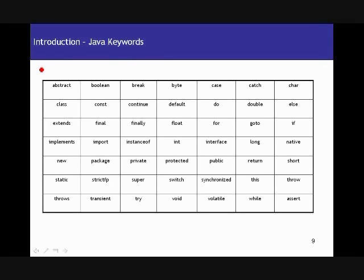The latest version has probably one or two keywords added to this list. A keyword is nothing but a word which has got some kind of special significance to the Java compiler. Whenever the compiler comes across any of these words in the Java program, it knows that it has to deal with it in a special way. It's not just a simple word.